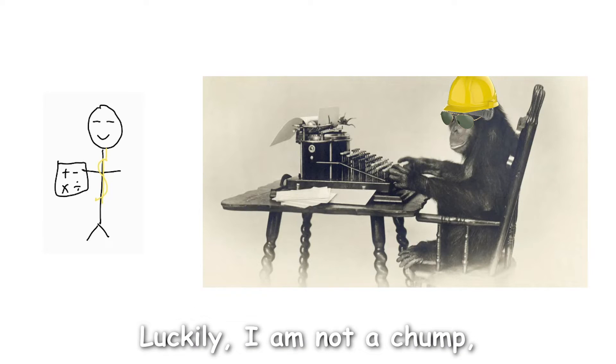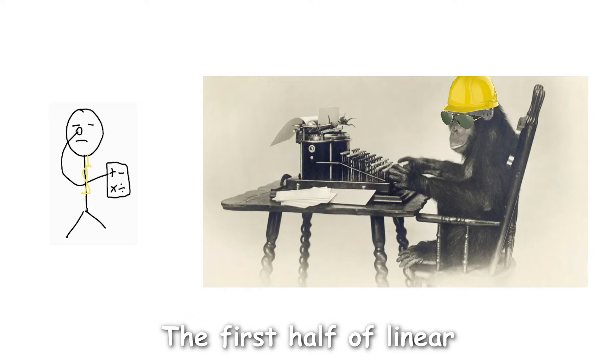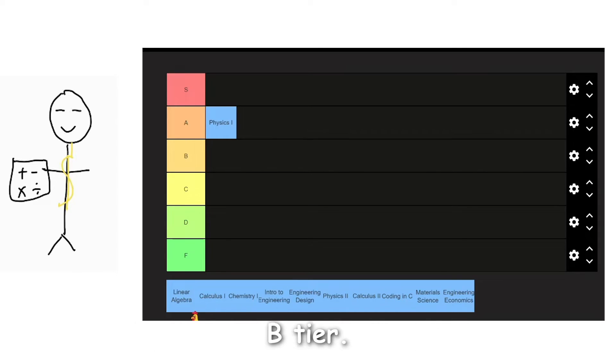Luckily, I am not a chump, so I found the textbook online for free. The first half of linear algebra was a D tier, with the second half being A tier, so I will meet in the middle and give it the B tier.